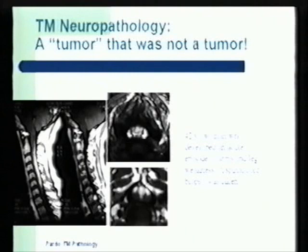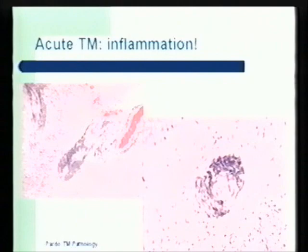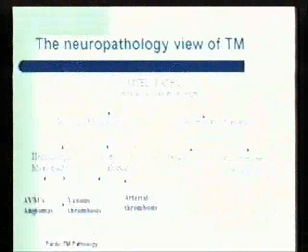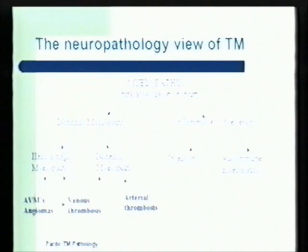I want to conclude my presentation with the neuropathology view of transverse myelitis. From neuropathology, I use the term myelopathy rather than myelitis, because myelitis in pathology specifically means inflammation, and not everything related with spinal cord disease means inflammation. In transverse myelitis, from a neuropathological perspective, we may have two major areas of concern: ischemic myelopathy or inflammatory myelopathy. Within ischemic myelopathy, we need to determine if it is hemorrhagic or ischemic in nature.